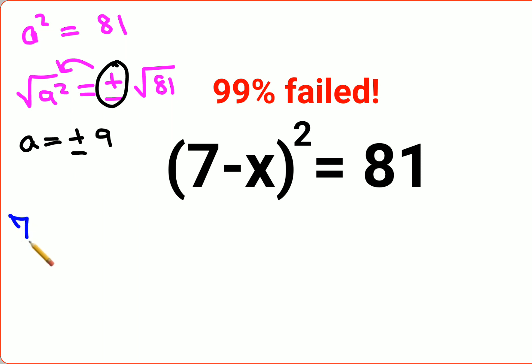So now in order to find the value of x we'll shift the x on this side and the number on this side. So we have 7 minus 9 equals to x.